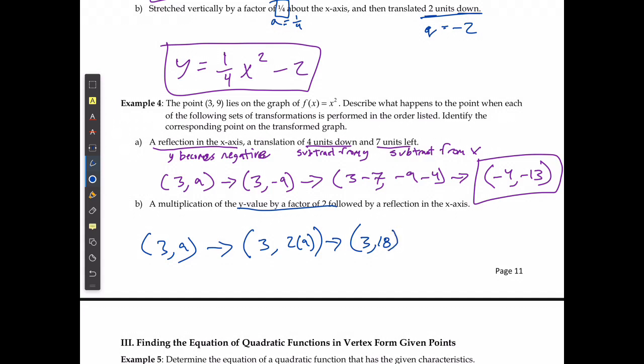And then finally it wants a reflection, which means that y is going to become negative: 3 and negative 18. And there's my new point.